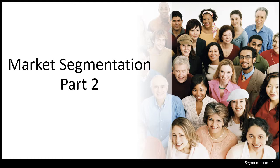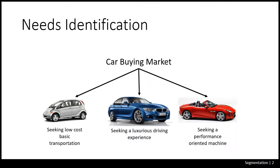In our last discussion on segmentation, we talked about how it was critical to start with understanding the needs or problems that buyers were trying to solve. Going back to the example of the automobile market, we saw that we could break it down by those seeking low-cost basic transportation, a luxurious driving experience, or a performance-oriented machine.